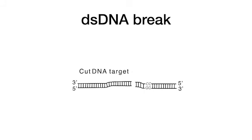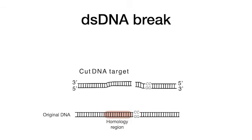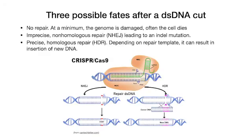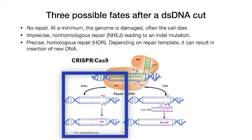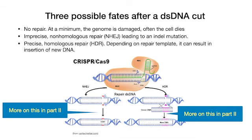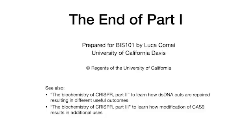The ribonucleoprotein complex eventually falls off the cut sites, the single-stranded DNAs re-anneal, and we are left with a double-stranded DNA cut. The bend in the DNA signals where the original recognition site was. There are three possible outcomes: if unrepaired, severe genome damage results and the cell frequently dies; second, imprecise non-homologous repair leading to an indel mutation; third, precise homologous repair which, depending on the repair template, can introduce new sequences. The next video, CRISPR biochemistry part 2, explains these outcomes in detail.